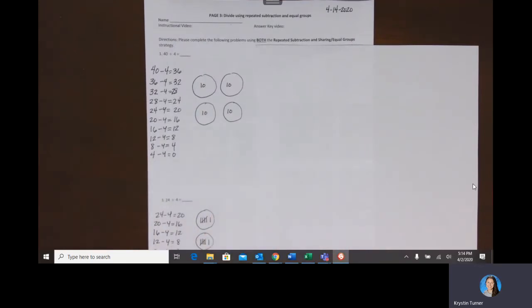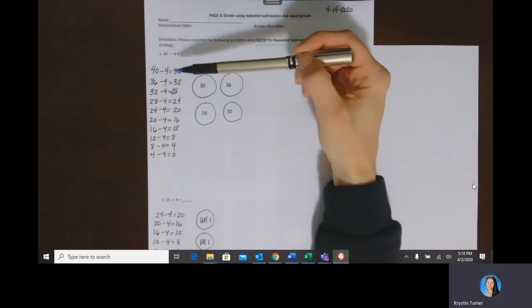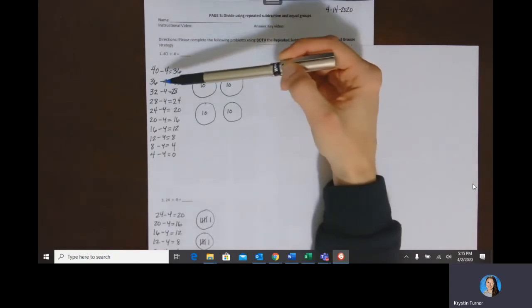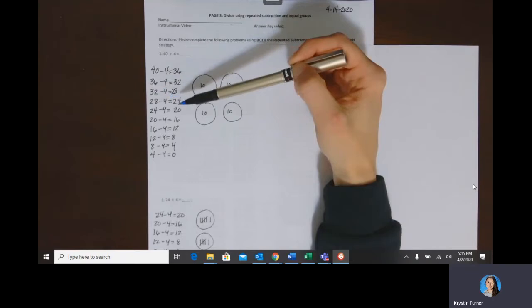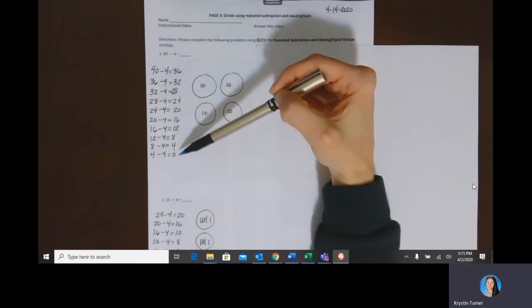All right, so we're using the repeated subtraction and equal group strategy. The repeated subtraction one takes a while but is very easy to utilize. You just have to make sure that you're subtracting correctly. So we have 40 minus 4 is 36, 36 minus 4 is 32, and we just keep subtracting 4 until we get to zero.